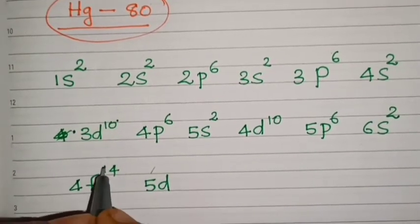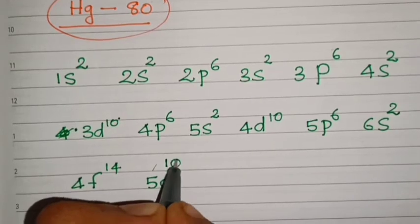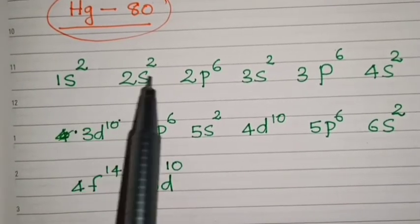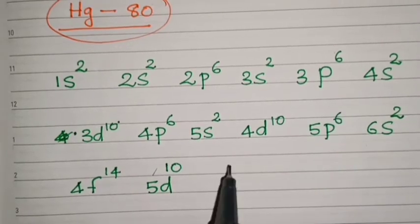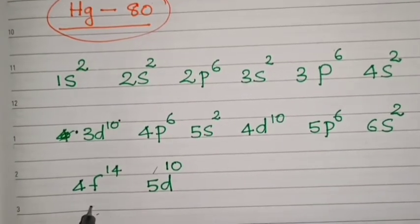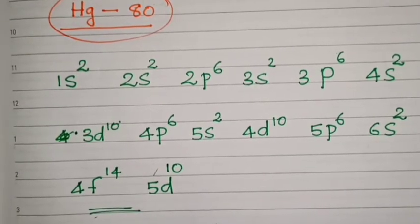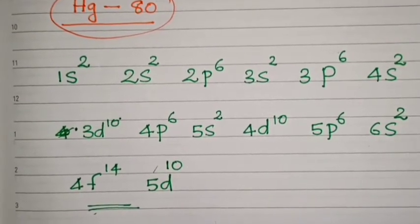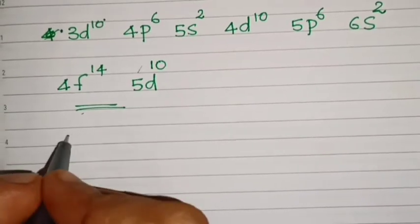Next is 5d — so 5d10. When we count the total numbers: 26, counting all together, we will get a total of 80. We can verify whether we have counted the numbers correctly. This is the complete electronic configuration for Mercury.